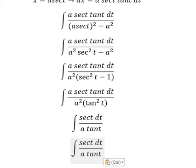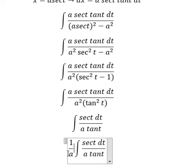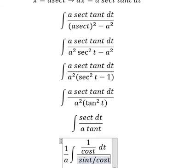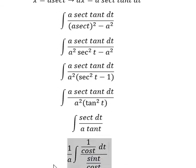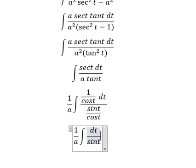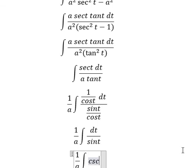I will put a outside. Sec t we change to 1 over cos t, and tan t we change to sin t over cos t. Next we simplify cos t and cos t. This becomes cosecant t dt.